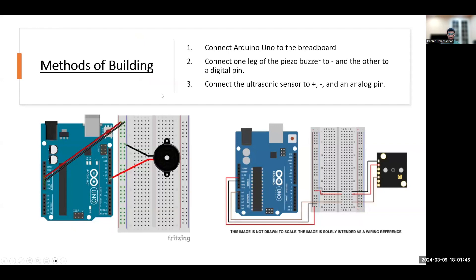Next for methods of building, first you need to connect plus and minus on the Arduino Uno to the same on the breadboard. And then for the piezo buzzer you need to connect one leg to minus, another to a digital pin. Then for the ultrasonic sensor you need to connect it to plus, minus and an analog pin.